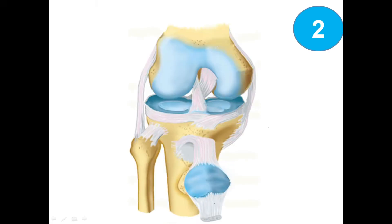The next picture is showing the anterior view of the knee joint. Let's talk about the bones first. This is the femur, we got here the tibia, we got here the fibula, and here is the patella. We talk about the articular cartilage — that is the hyaline cartilage here, here, and here.